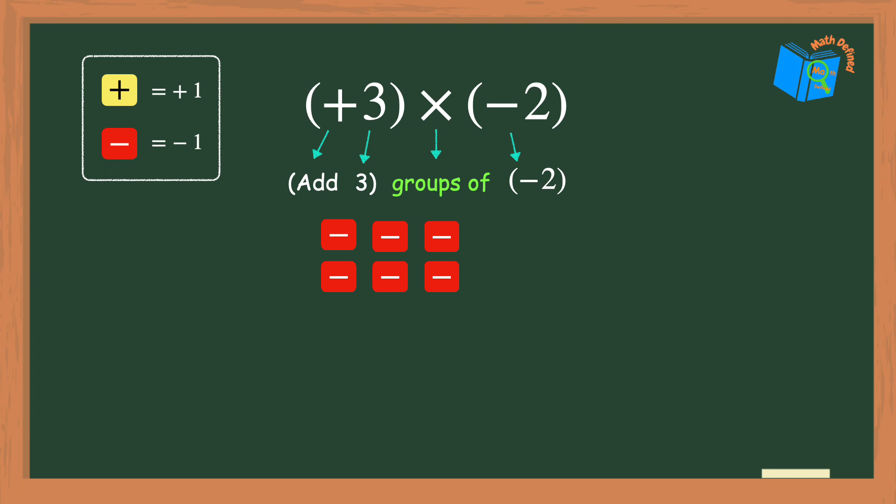All I need to do now is count the number of red counters I have, which is 6, and my final answer is negative 6 because the counters are negative. So positive 3 times negative 2 is negative 6. Now that wasn't so confusing.